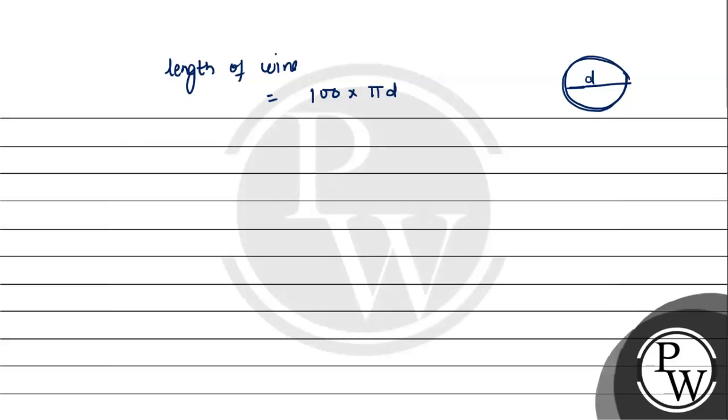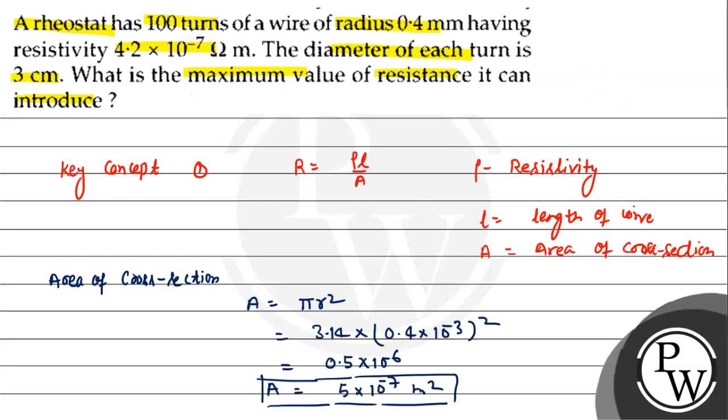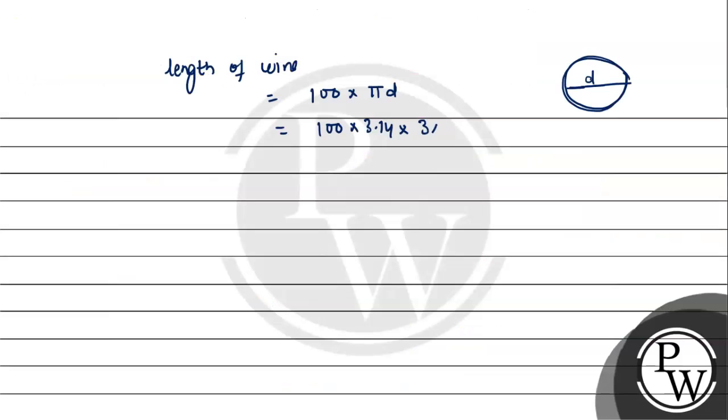That's 100 × 3.14 × D. The diameter is 3 centimeters, which equals 3 × 10^-2 meters. So the length is 6.28 meters.